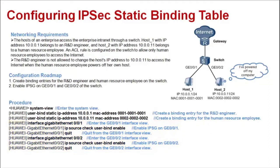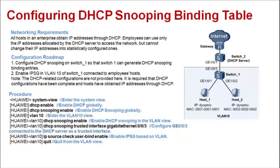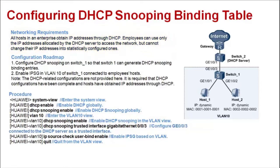Now let's look at an example on how to configure a DHCP snooping binding table. As shown in the figure, all hosts in an enterprise obtain IP addresses through DHCP. Employees can only use the IP addresses allocated by the DHCP server to access the network, but cannot change their IP addresses into statically configured ones. To achieve this goal, we need to configure IPSG.